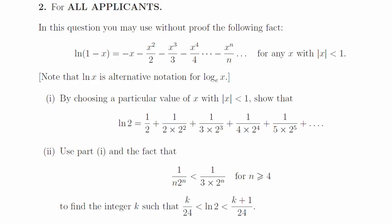Question 2, part 1. Set x equals 1 half, and then use log 1 half equals minus log 2. Part 2. Use the given inequality on every term apart from the first three, and then sum a geometric series to simplify this to 17 over 24. Log 2 is also bigger than the first three terms, which are 16 over 24, so k equals 16.